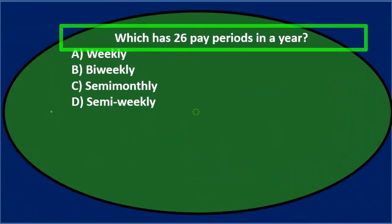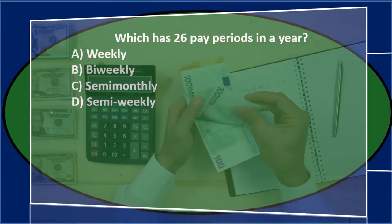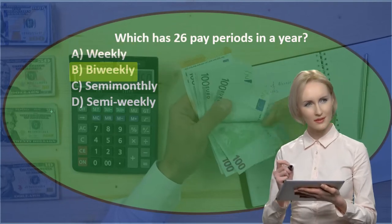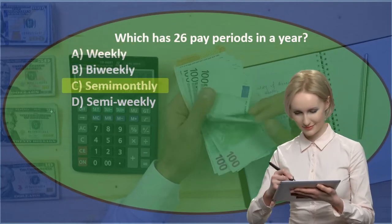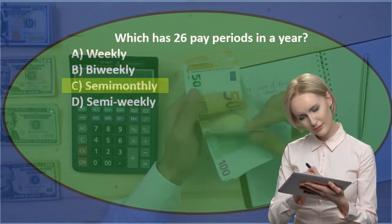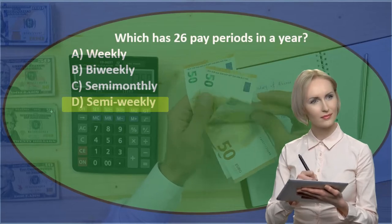Which has 26 pay periods in a year? A: weekly. B: bi-weekly. C: semi-monthly. Or D: semi-weekly?